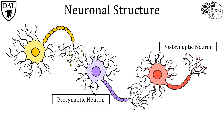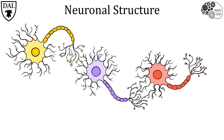When describing the connection between two neurons, we refer to the neuron sending the signal as the pre-synaptic neuron, while the neuron receiving the signal is called the post-synaptic neuron. Neuronal signals or messages are most often passed to the next neuron by neurotransmitters, which are chemical signals typically released at the axon terminals of the pre-synaptic neuron and received by receptors on the dendrites of the post-synaptic neuron.